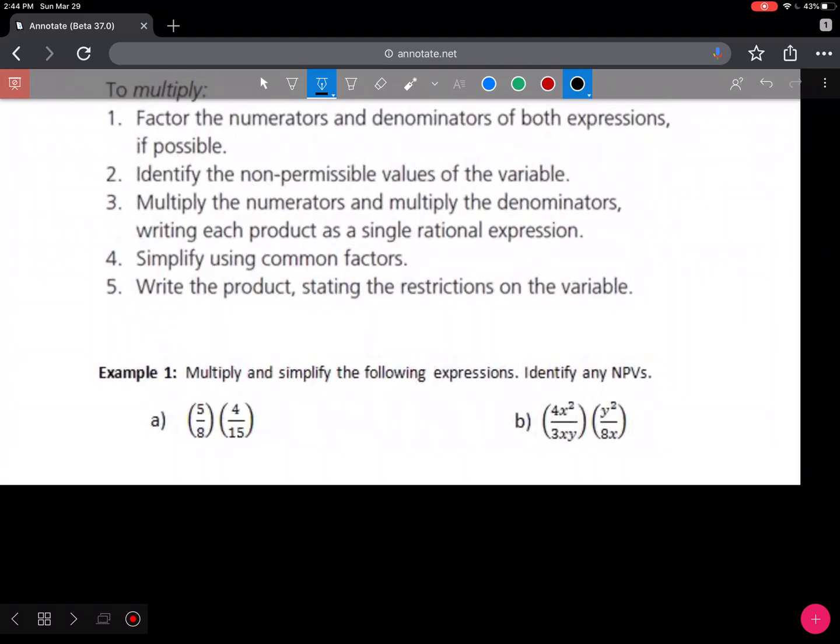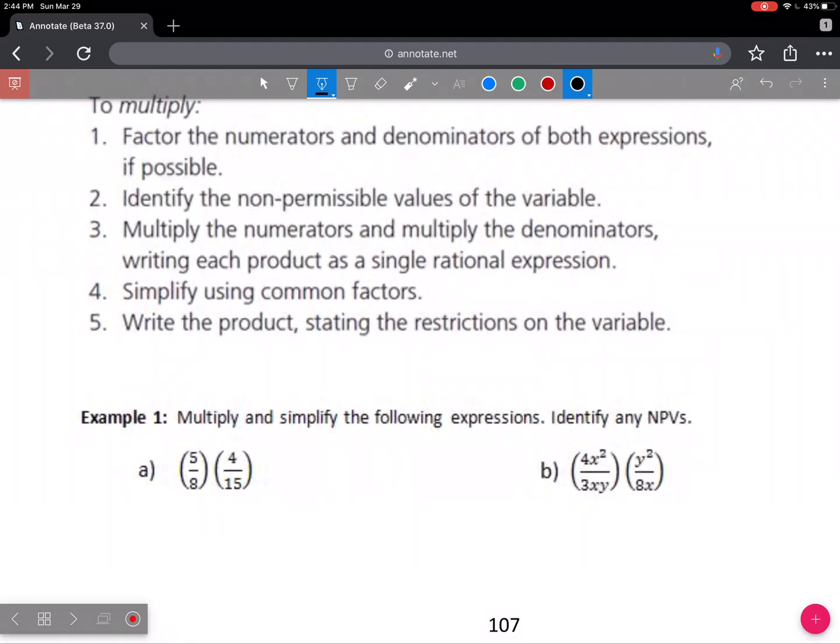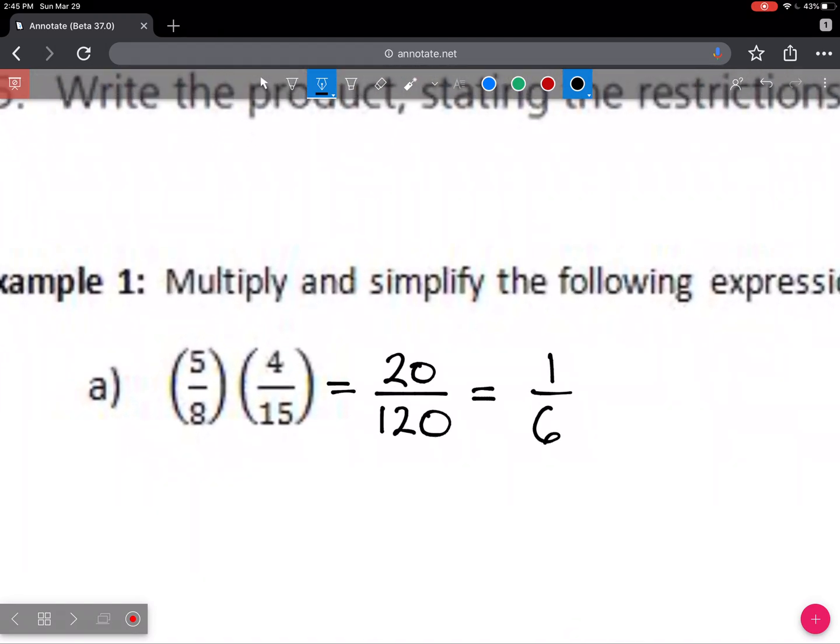Multiplying fractions, you just go top to top, bottom to bottom. So, 5 times 4 is 20. 8 times 15 is 120. And then, this will reduce to 1 over 6. And again, you can do all that in your calculator. You don't want to do any of that in your head. Just make sure that if you're going to be dividing in the calculator, you could use brackets like this. That will work. And then, you want to go math into fraction, and then convert to a lowest terms fraction. Go math, enter, enter on your Texas Instruments calculator.